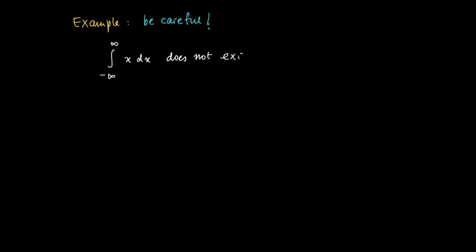This integral does not exist. Well, why is that? We can take an arbitrary a, for instance 0, but let's say we take an arbitrary a and try to calculate the integral from a to infinity, so the one-sided improper integral, the Type A integral.